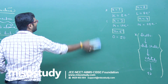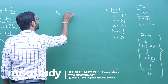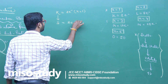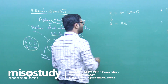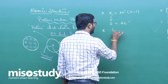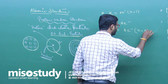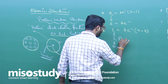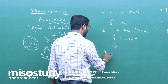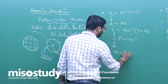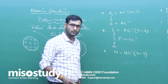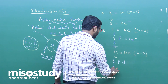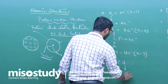Now let's look at sub-shells. K has 2 electrons and N equals 1, so it has only 1 sub-shell — S, which contains 2 electrons. L has 8 electrons and N equals 2, so it has 2 sub-shells — S and P. S has 2 electrons and P has 6 electrons. M has 18 electrons and N equals 3, so it has 3 sub-shells — S, P, and D. S has 2 electrons, P has 6 electrons, and D has 10 electrons.